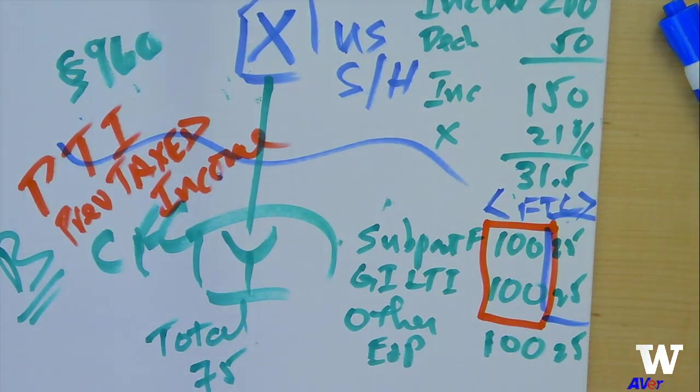As a result of certain ordering rules that are within Section 959, when a dividend is actually paid, it will be considered to come first out of the PTI account. And only after that PTI account is exhausted, falls to zero, would it come out of other earnings and profits.